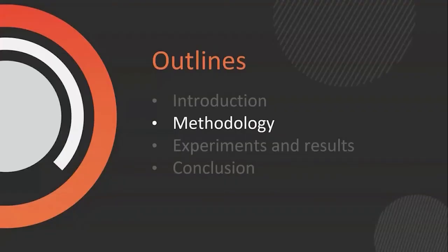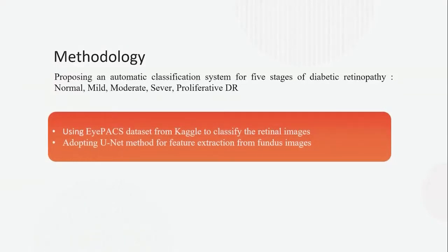Methodology. We propose an automatic classification system for five stages of Diabetic Retinopathy: Normal (no diabetic retinopathy), Mild, Moderate, Severe, and Proliferative Diabetic Retinopathy. We used the APTOS dataset from Kaggle to classify the retinal images, and we adapted the U-Net method for feature extraction from fundus images, which includes segmentation and feature extraction.